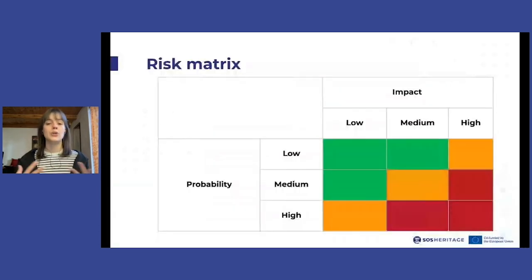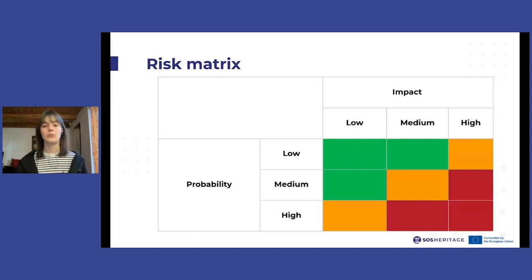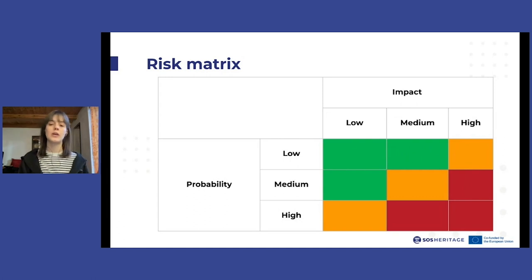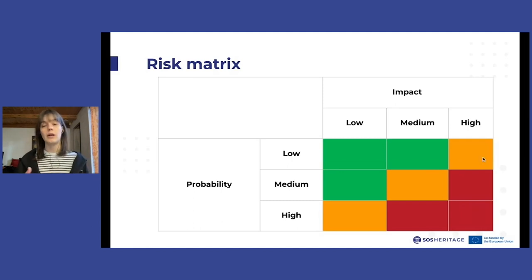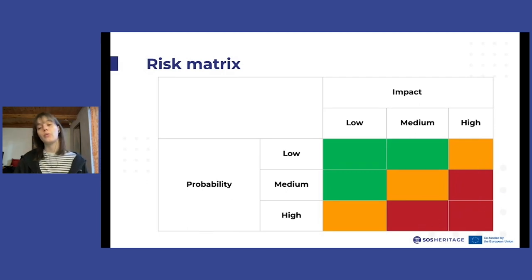To create a visual representation of the different risks threatening a particular asset, we can use a risk matrix. Depending on the number obtained by the product of probability and impact, we will have different areas of this graph. There is a green area where the risk is not urgent and should be controlled and monitored, a yellow area where mitigation measures should be implemented, and a red area where the most urgent risks require immediate mitigation measures to protect the assets.